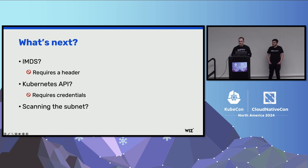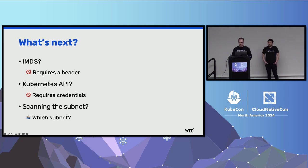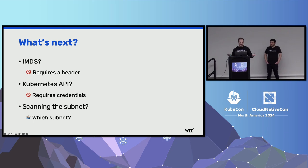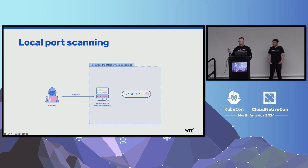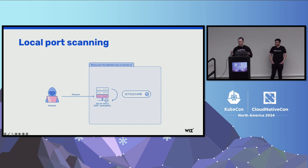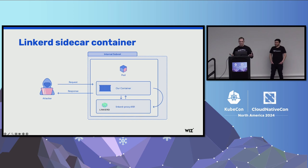So we thought about scanning the entire Azure ML subnet, but we didn't know anything about how this infrastructure was implemented. We decided to scan the only IP address that we were sure to exist — localhost. We decided to scan the entire port range of localhost to see if we could find any neighbor technologies other than the vulnerable SSRF component. We scanned from port one all the way up to 65,000, and after filtering out the results, we found one open port: 4191. It's apparently the Linkerd sidecar container port.